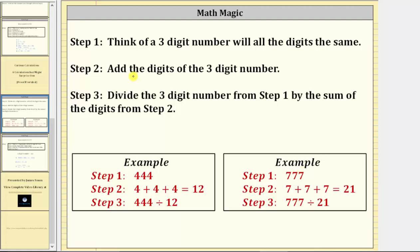Step two, add the digits of the three-digit number. So for 444, we would have four plus four plus four, which equals 12. For 777, we would have seven plus seven plus seven equals 21.